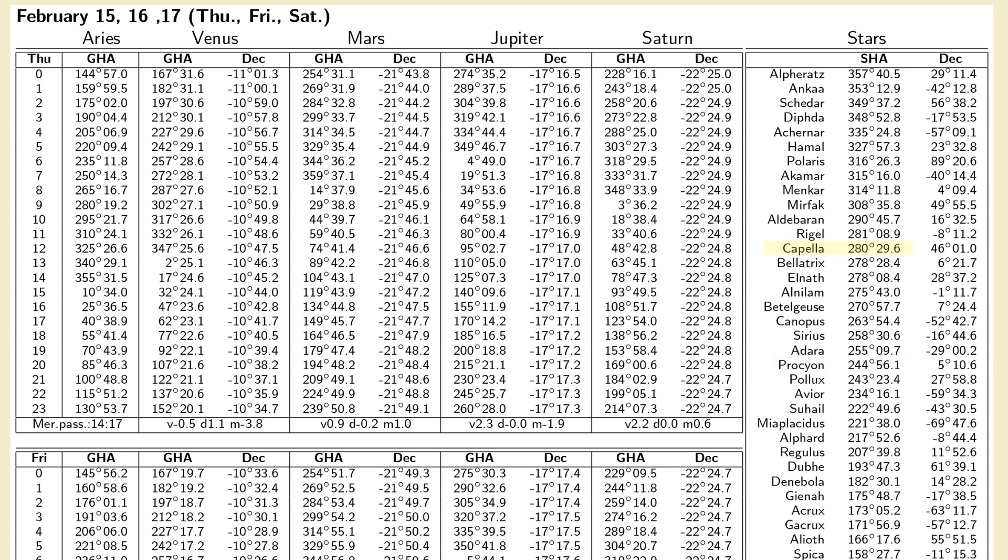The sidereal hour angles are just a way of linking every star to this first column, Aries. What it means is that the almanac can tabulate hourly values for Aries, and then you can transform them using the sidereal hour angles for each star.